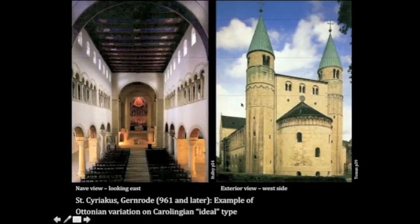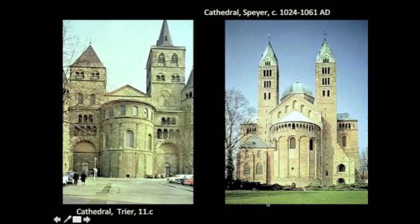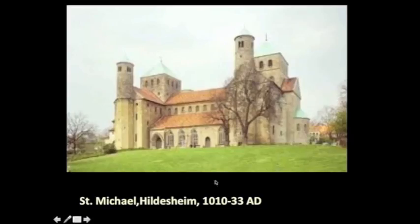So here is Saint Syriacus, and we also see the cathedral in Trier and the Speyer Cathedral. My favorite of all the Ottonian churches — and probably the one that's best preserved and gives you the clearest sense of how this architecture works — is Saint Michael's Church in Hildesheim.